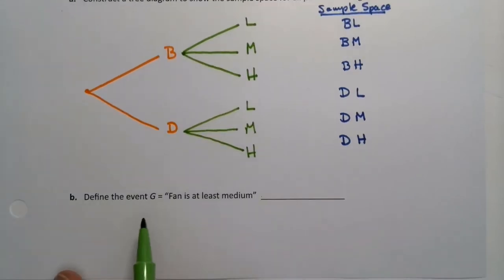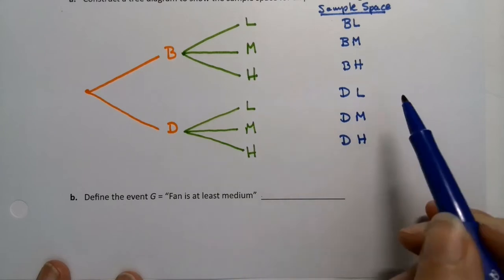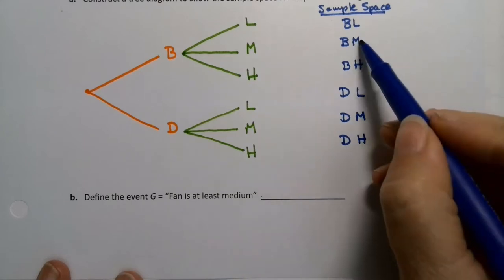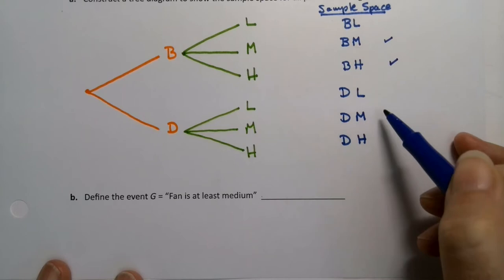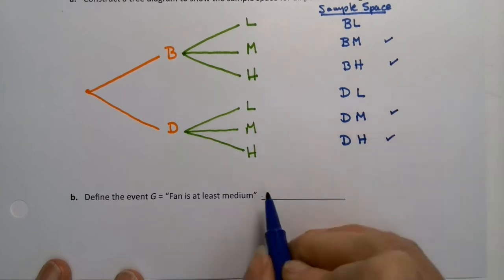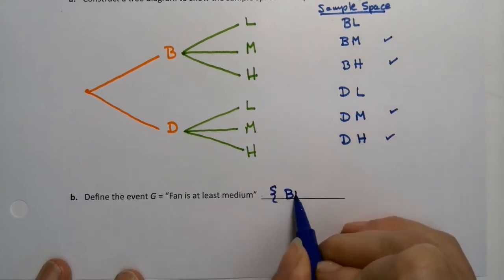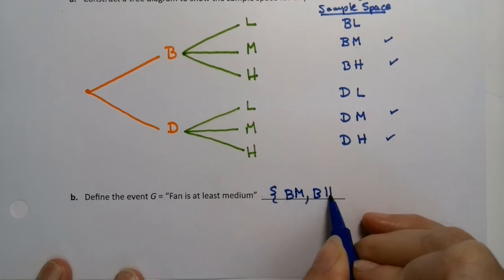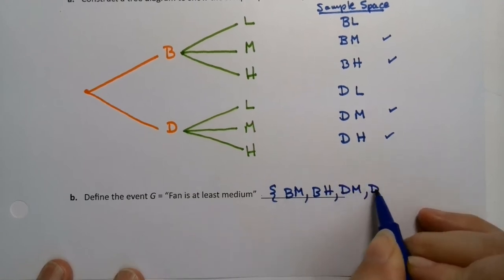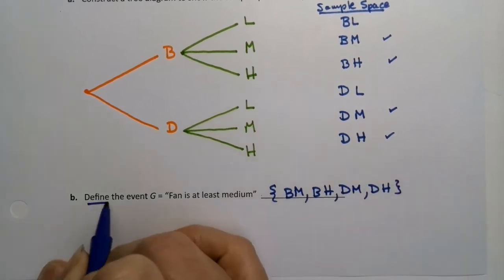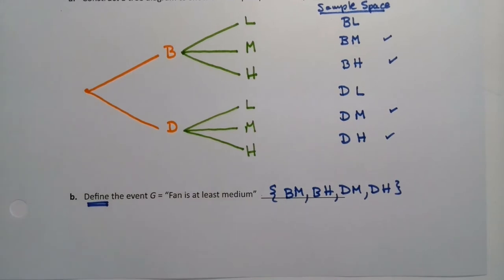Alright, let's define the event G, which is the fan is at least medium. At least medium means medium or higher, right? So medium or higher would be this medium, this high. Not the lows. This medium and this high. So it would be BM, BH, DM, or DH. They're asking us to define it. They didn't ask us to define the probability of it, although we could. But they asked us to define the event, which is literally just listing out the outcomes.